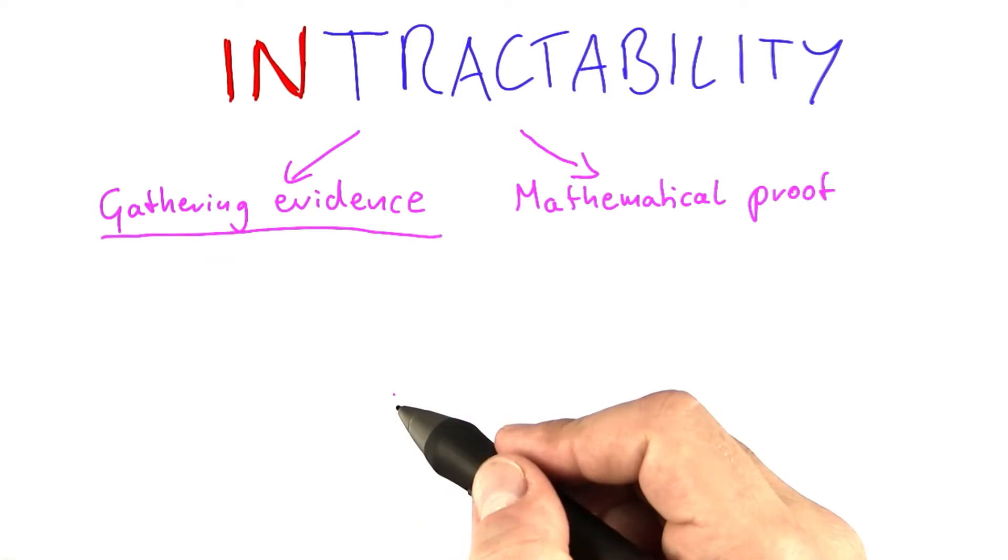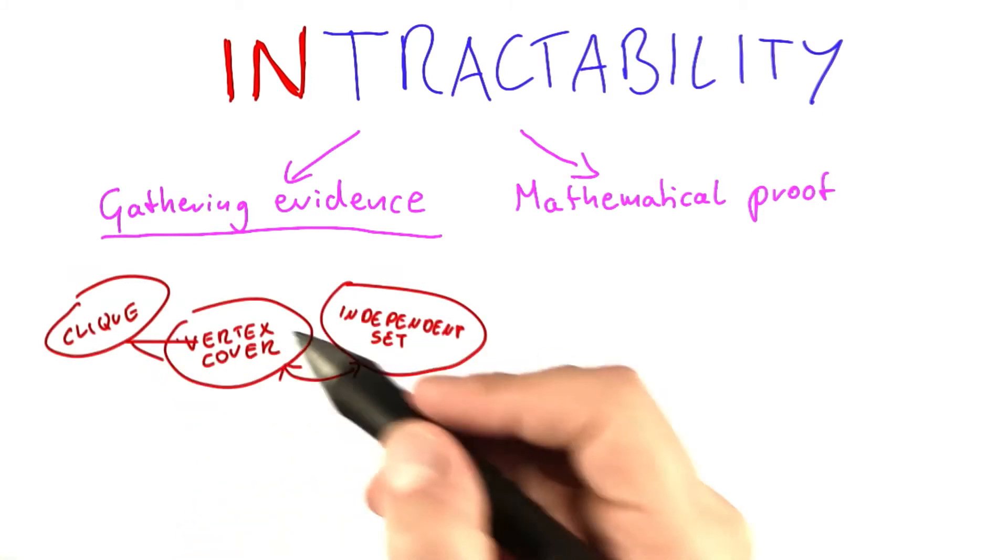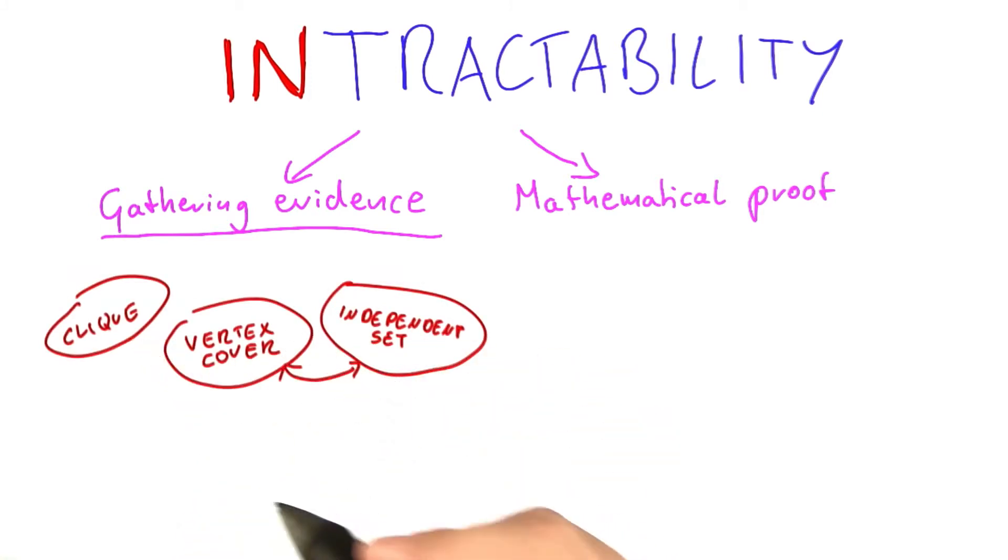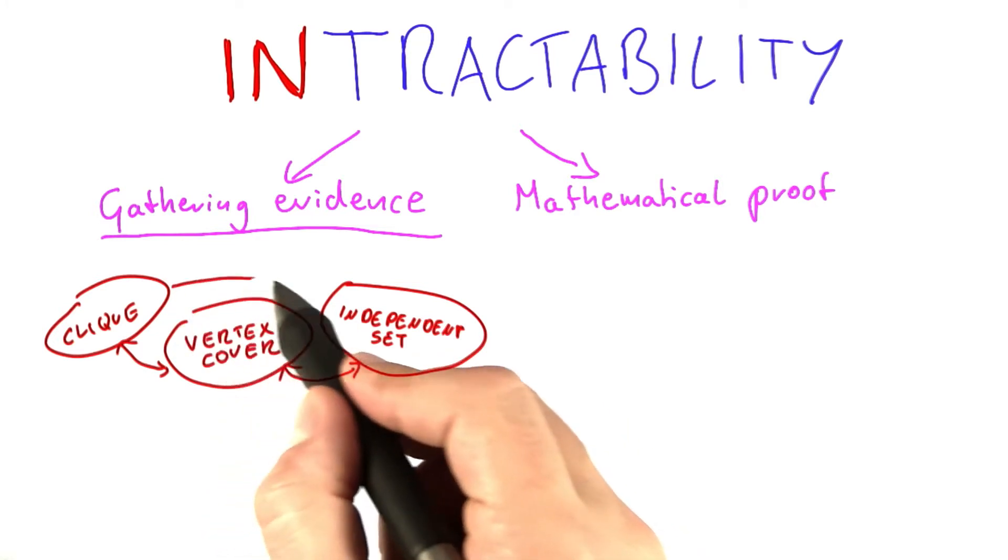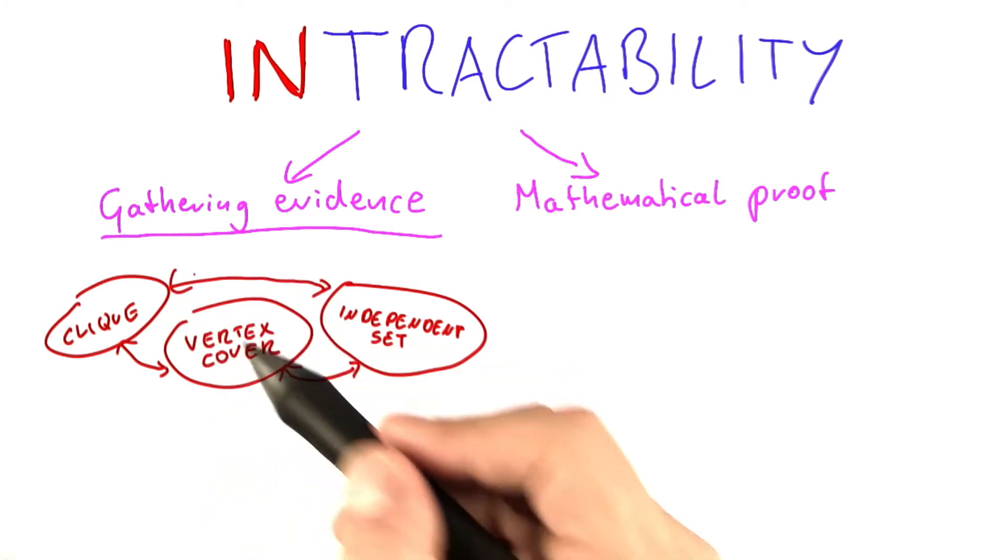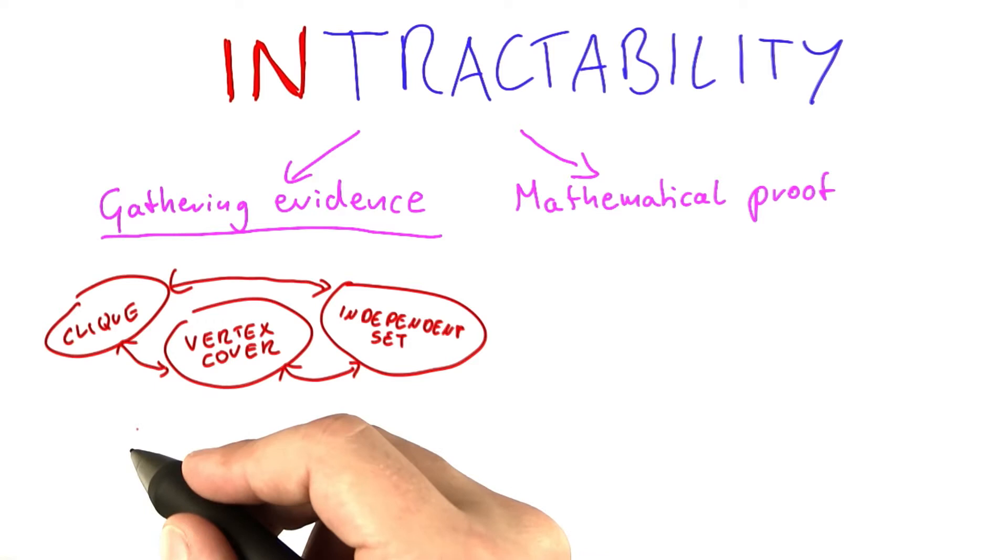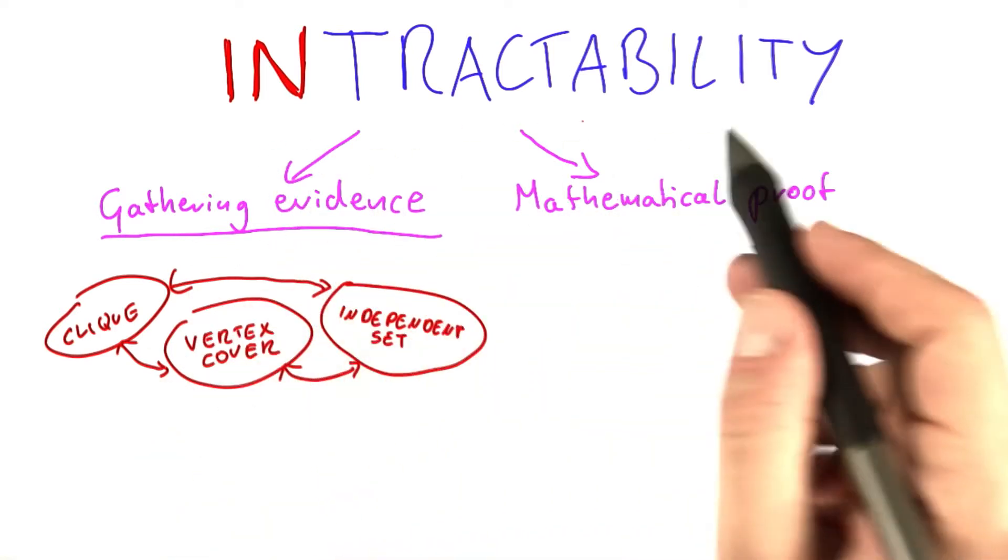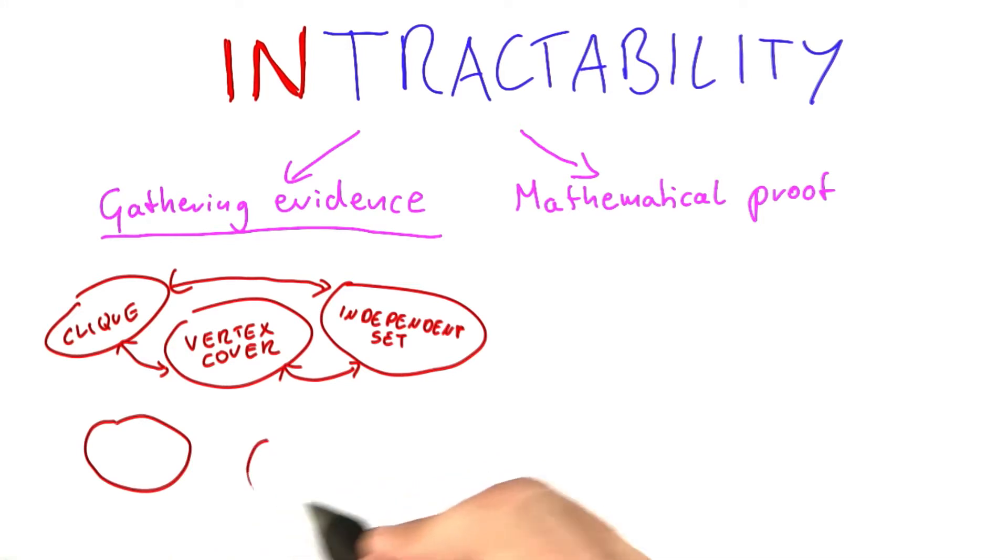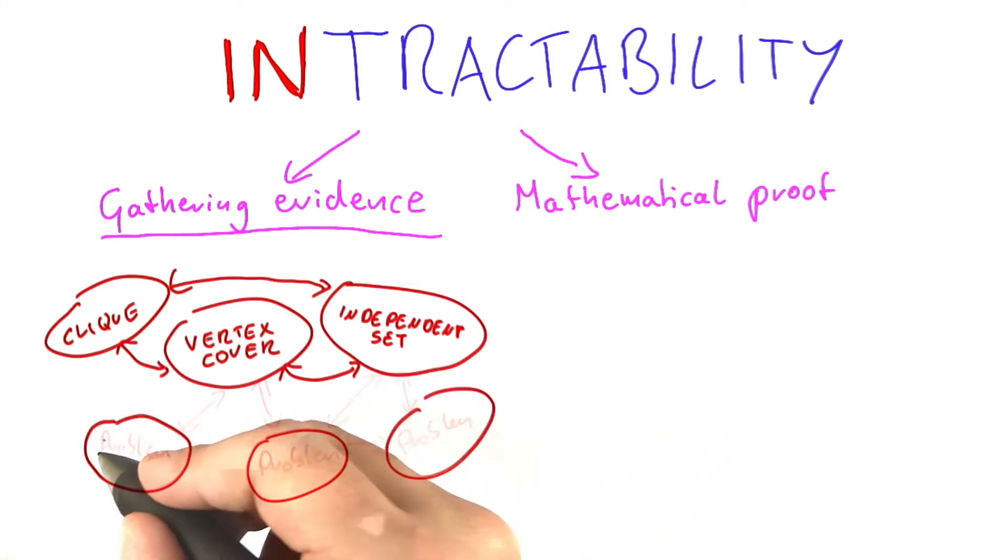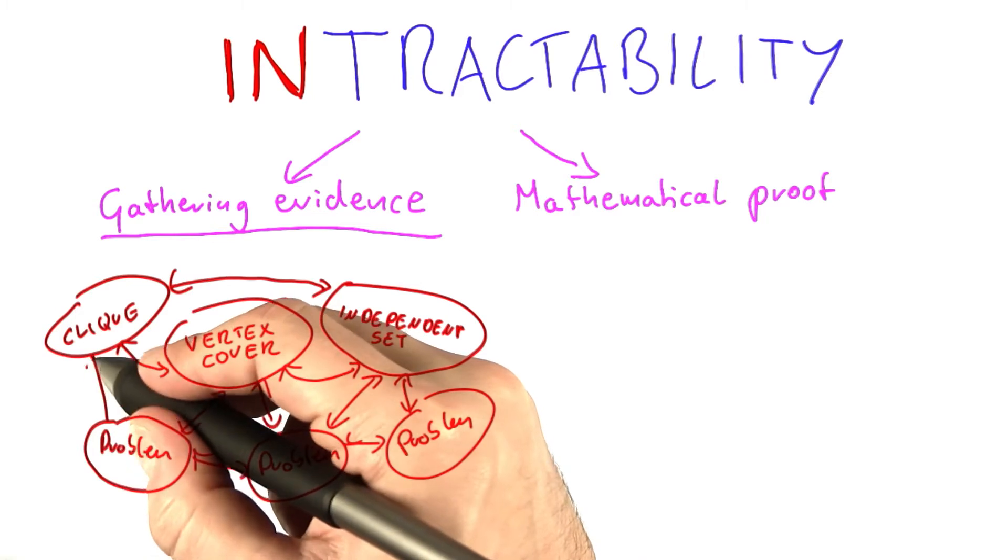So how can we gather evidence that the problems of Alice, Bob and Carol could be intractable? One way could be what we have done in the last unit. If you recall, in the last unit we showed that all of these three problems are either tractable or intractable. So one way to gather evidence that they are intractable is to find more and more problems for which we also don't know polynomial time algorithms and connect them to the problems that we know.